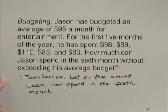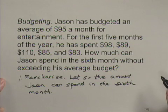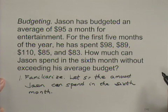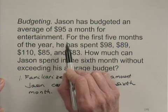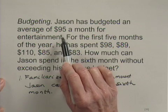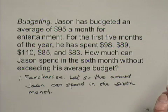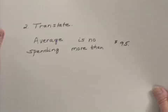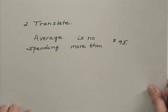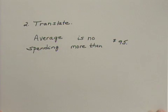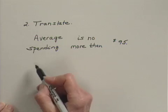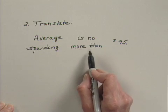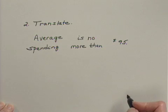Now we need to translate this to an inequality. In this case, we're going to translate to an inequality because he wants to spend no more than $95 a month on average. So that tells us we have an inequality. And to do the translation, we know that the average spending is to be no more than $95.